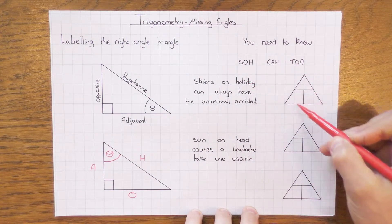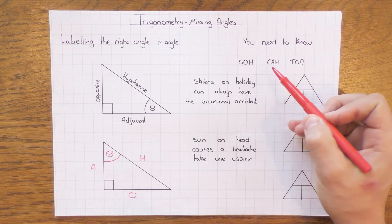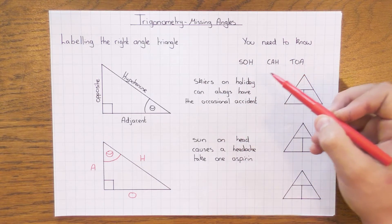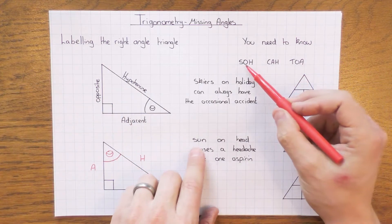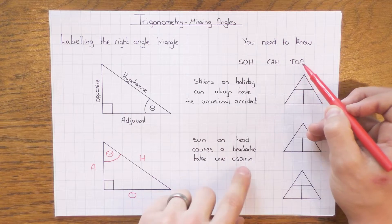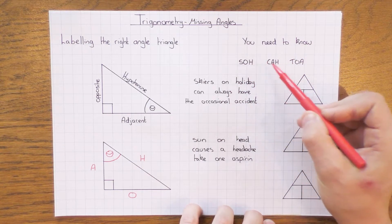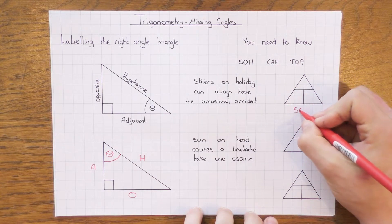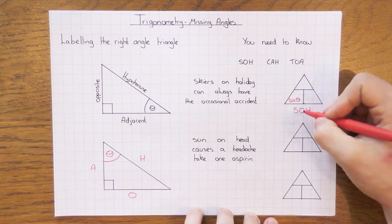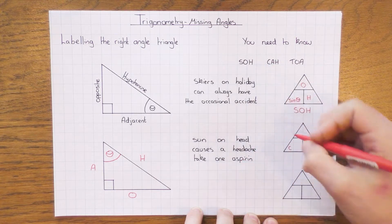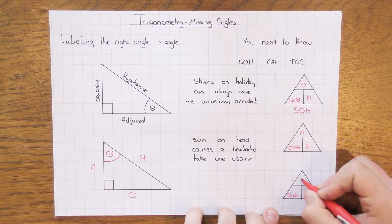You need to remember SOH CAH TOA because it's how you fill in these triangles. Some people are happy to just remember SOH CAH TOA, which is absolutely fine. Two little sayings that might help: 'Skiers on holiday can always have the occasional accident,' or 'Sun on head causes a headache, take one aspirin.' Whichever one you use, all you need to remember is SOH CAH TOA: sine theta equals opposite over hypotenuse, cos theta equals adjacent over hypotenuse, and tan theta equals opposite over adjacent.